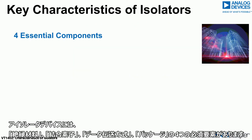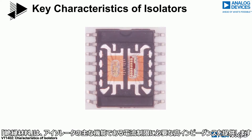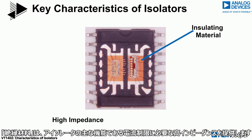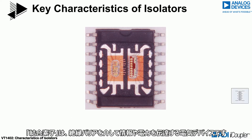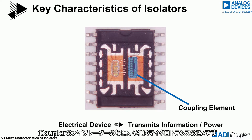There are four essential components of an isolator device: the insulating material, the coupling element, the data transmission method, and the packaging. The insulating material provides the high impedance necessary to limit current flow, which is the primary function of an isolator. The coupling element is the electrical device that transmits information or power across the insulation barrier. In the case of an i-Coupler insulator, it's a microtransformer.